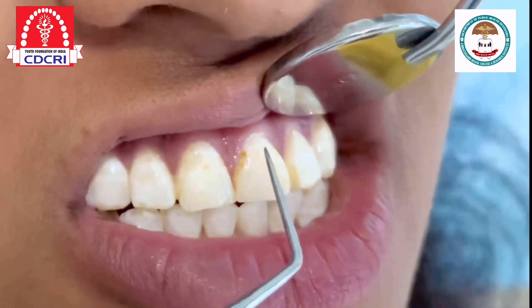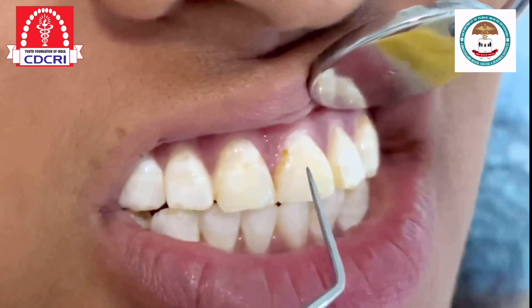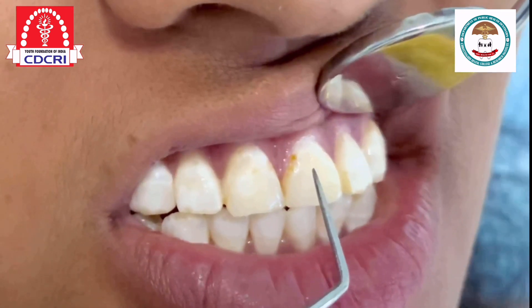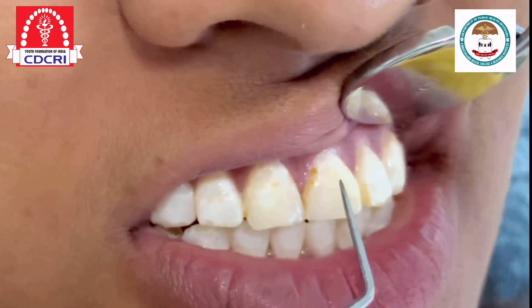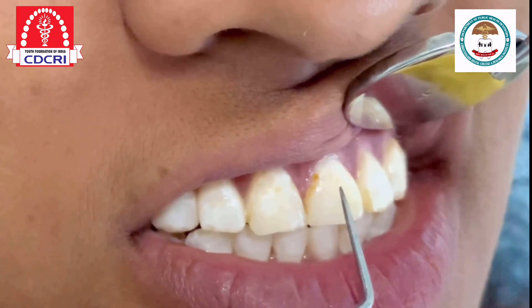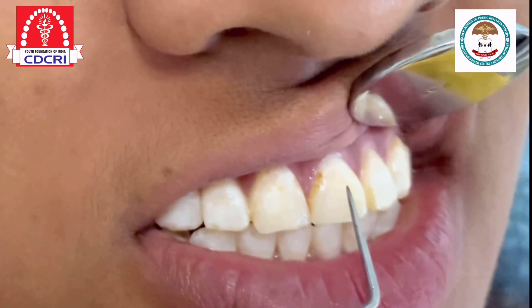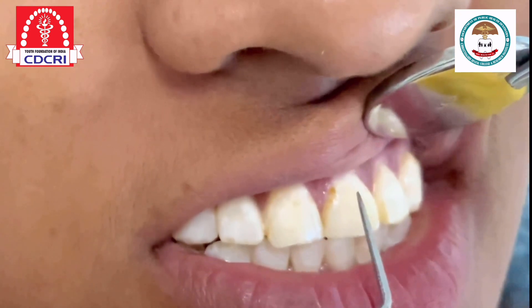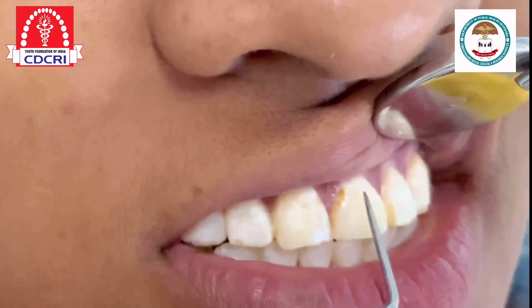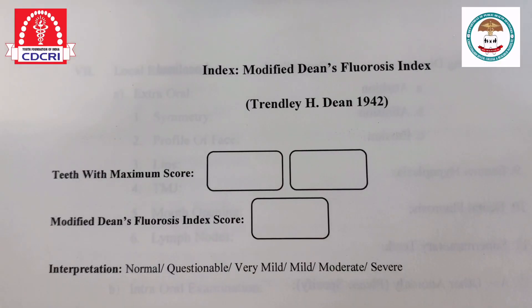On tooth number 2-1, it is scored as moderate, that is 3. In this, all the enamel surfaces of the teeth are affected and brown stain is frequently a disfiguring feature.